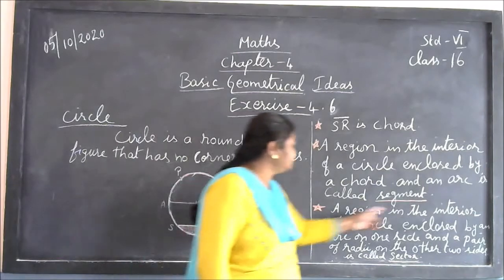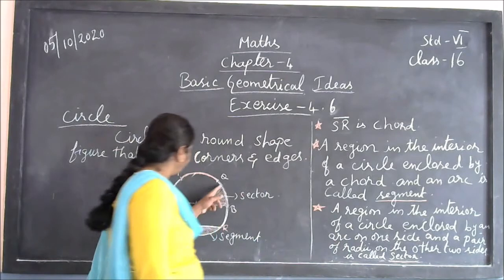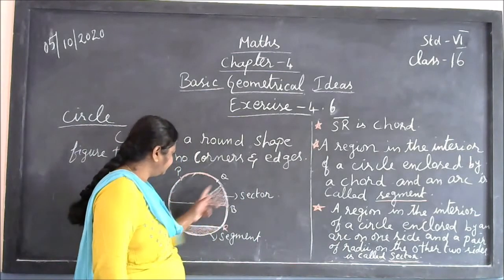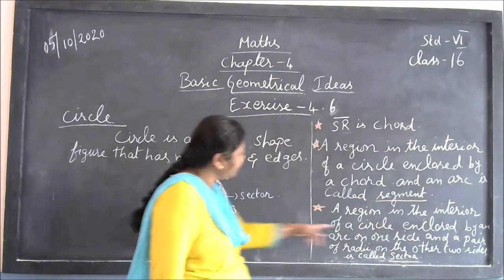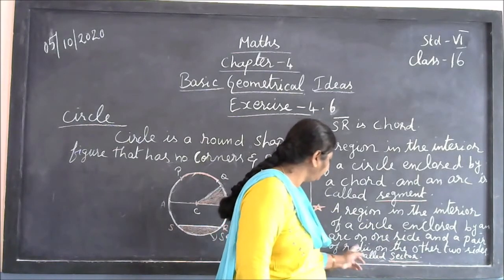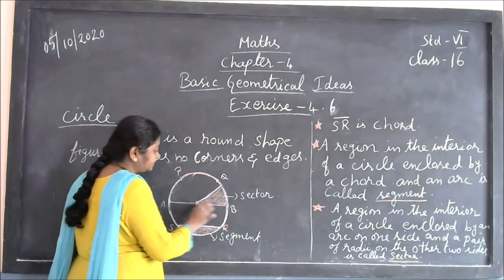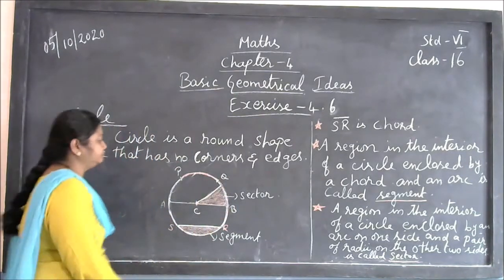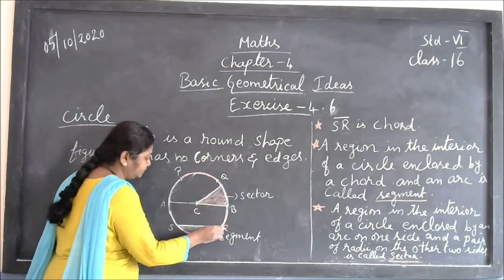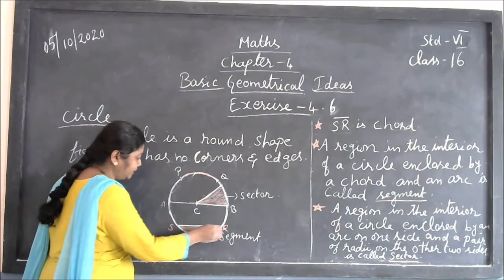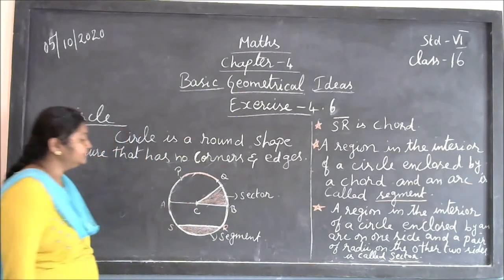The next one is the sector. A region in the interior of the circle enclosed by an arc on one side and a pair of radii on the other two sides is called a sector. This inside portion is called a sector. The line is called the chord, and the region enclosed by the chord and the arc is called the segment.